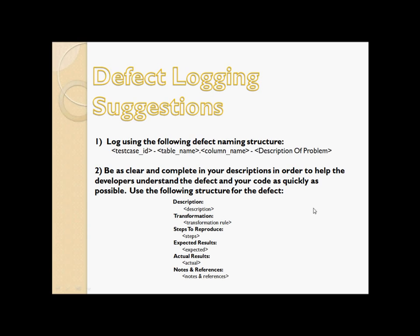After steps to reproduce, write the expected results based on those steps, then write the actual results. In Notes and References, include directory paths to mapping documents or any notes that give more information — for example, if your company uses Team Foundation Server, write the directory to find relevant files. This helps the developer access everything they need without coming back to you, and that is all for quality assurance.